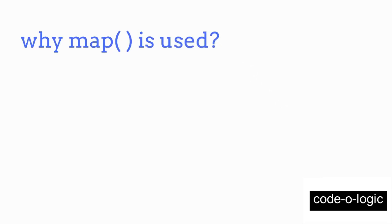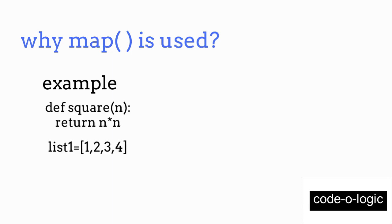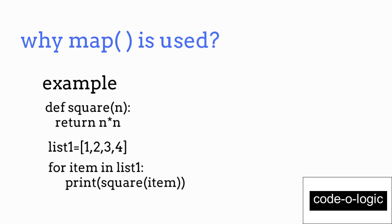Now let's see why the map function is used. I will show you with an example. First, we will define a function named 'square' which returns the square of a number. We have a list called 'list one' containing numbers 1, 2, 3, and we want to find the square of each number. By following the conventional way, we use a for loop to print the square of each number in the list, and we get the output as 1, 4, 9, 16.